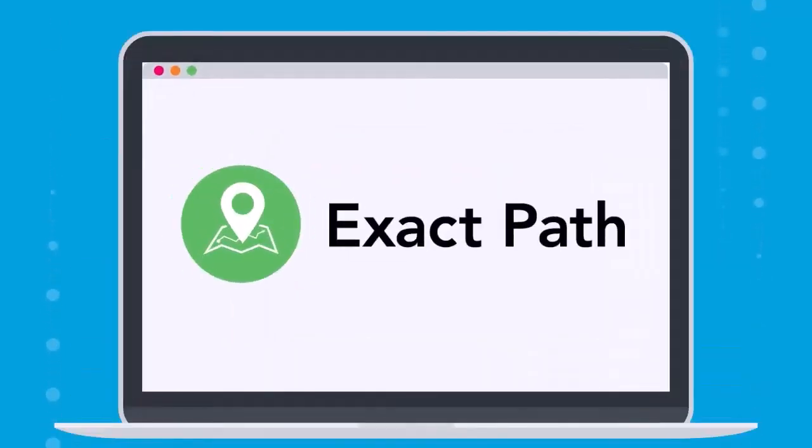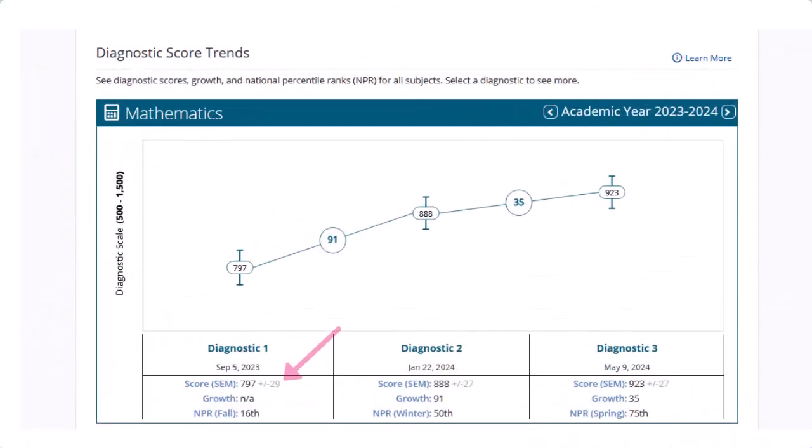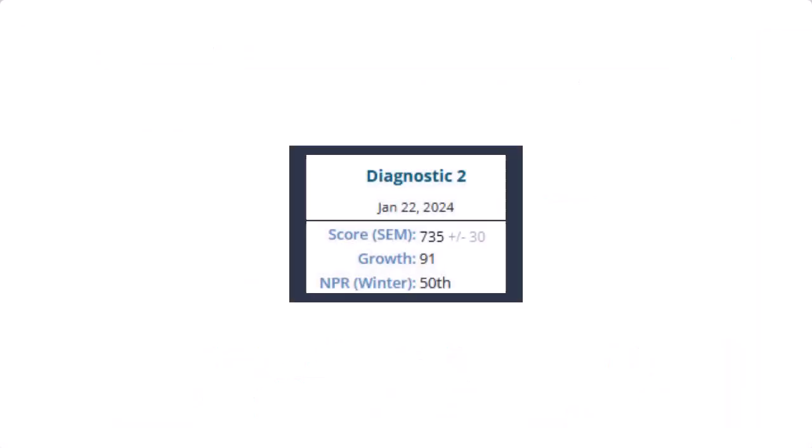Standard error of measurement is reported in two ways within XactPath. On the XactPath Student Summary Report, the SEM is reported next to the student's scale score. In this example, the student's scale score is 735 and the SEM is 30, which means that the student's score would likely fall between 705 and 765 if they were to retest in the same testing window.